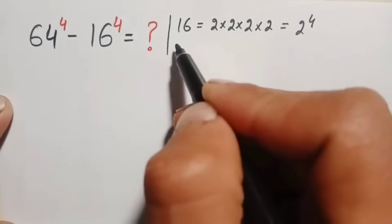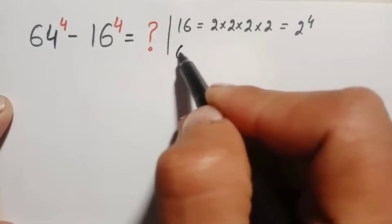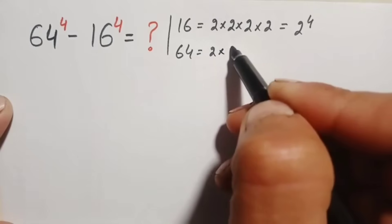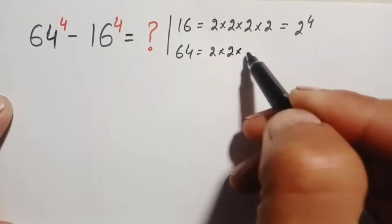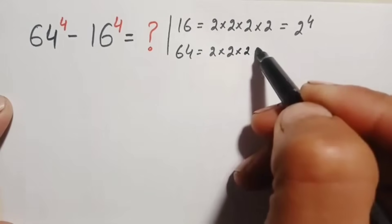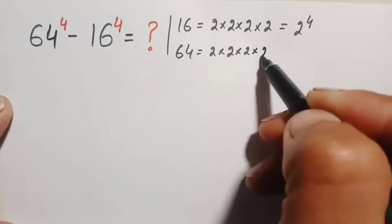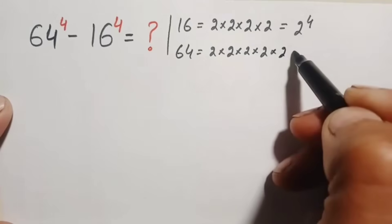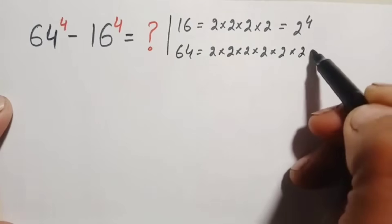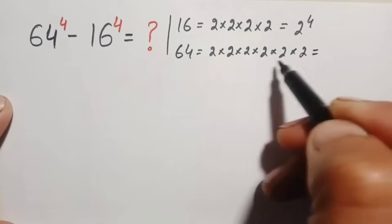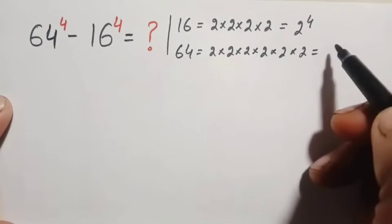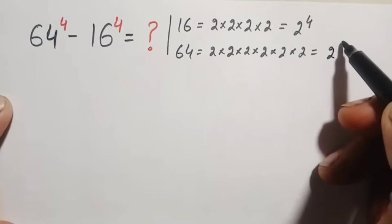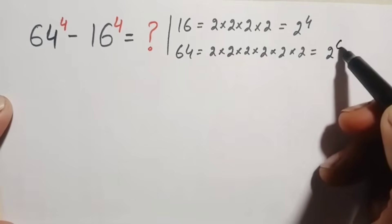We can also write 64 as 2 times 2 is 4, 4 times 2 is 8, 8 times 2 is 16, 16 times 2 is 32, 32 times 2 is 64. So 2 appears 6 times, and we can write this as 2 raised to the power 6.